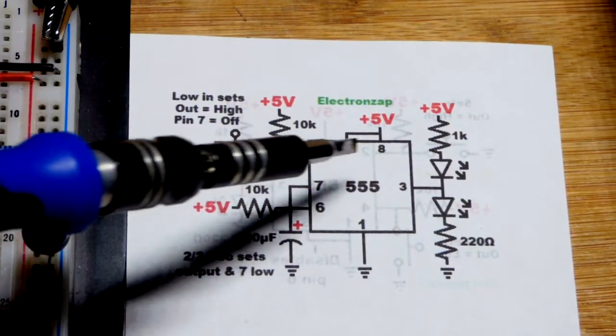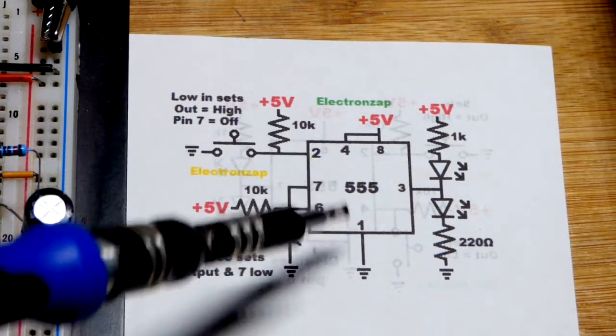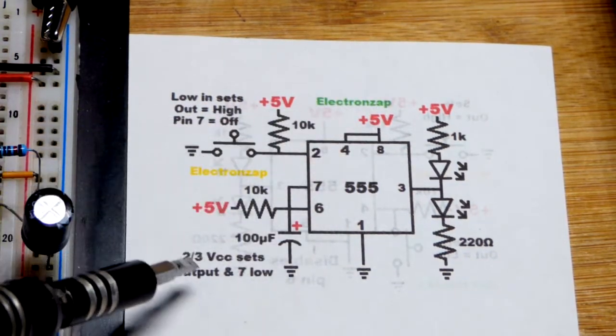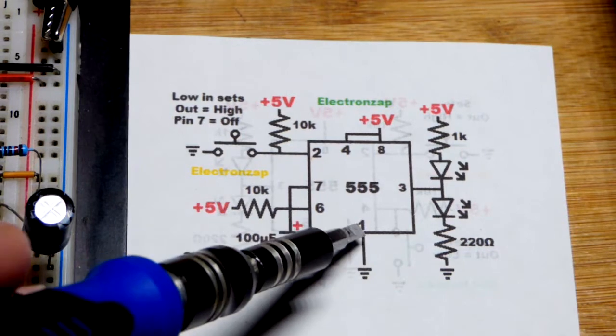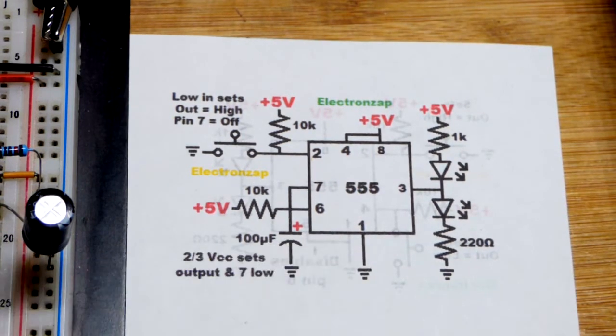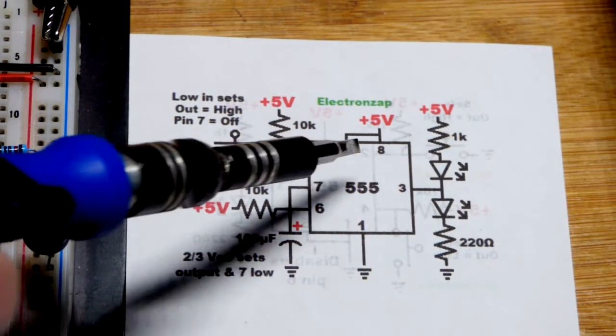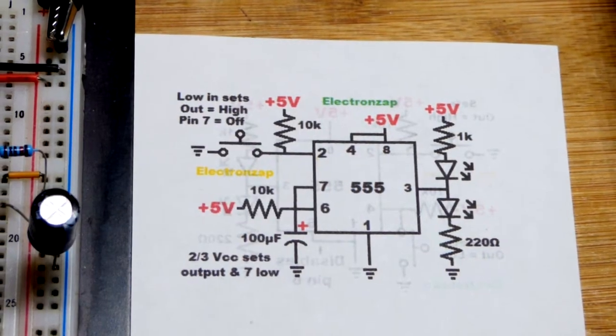We have to power the integrated circuit, pin number 8, to the positive supply, also known as VCC. And then pin number 1, we have to connect to ground. Also you'll notice here that we got pin number 4 to the positive supply.